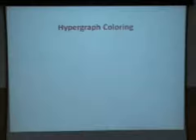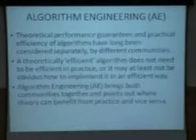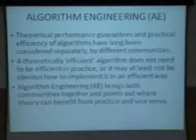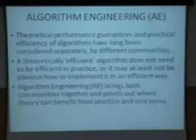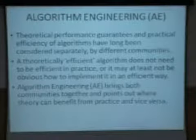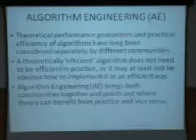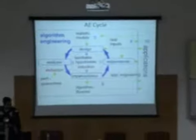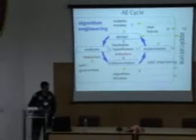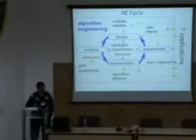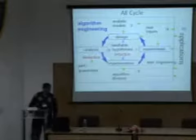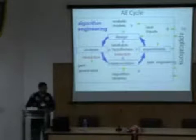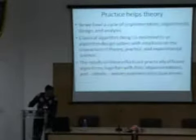We also illustrate this on the hypergraph coloring problem, in the context of algorithm engineering. Algorithm engineering tries to merge ideas from theoretical performance guarantees and practical efficiency — bringing together the computer science theory and practice communities to point out where theory can benefit from practice and vice versa. The idea is: you have an implementation, you perform experiments, change your design, do some analysis, improve your implementation, and the cycle continues — leading to computational algorithms which are also provably good in reaching solutions.